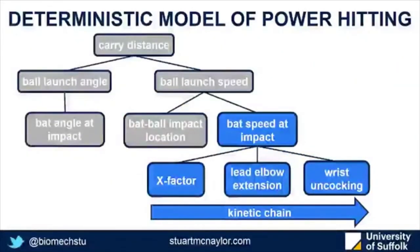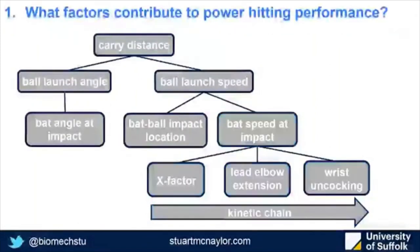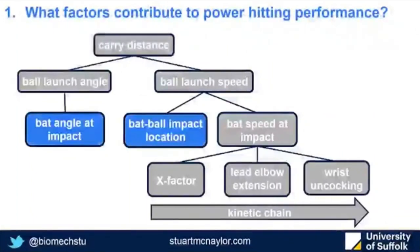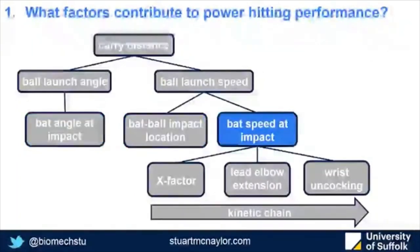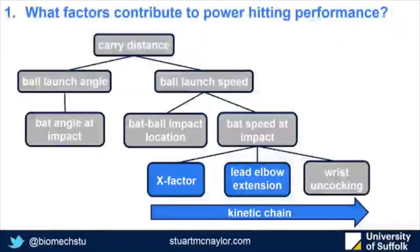So there are three parameters following that kinetic chain, starting at the pelvis through to the wrist. To answer our first research question — what factors contribute to power hitting performance — first, timing must be right to achieve the correct bat angle at impact and contact near the sweet spot. Once timing is right, bat speed becomes critical: the kinetic chain starting with pelvis-thorax separation, through to extending the elbows during the downswing, finishing with maximum wrist uncocking.